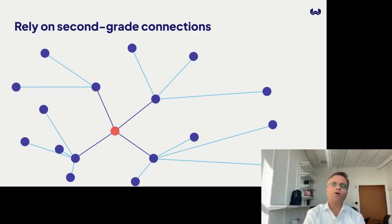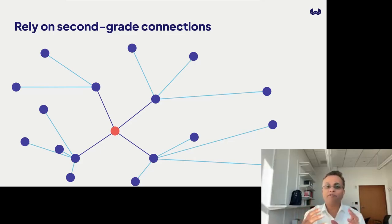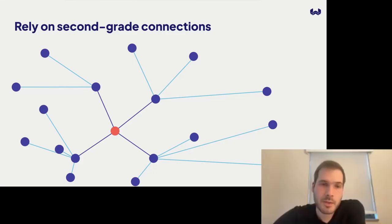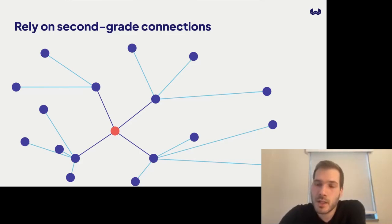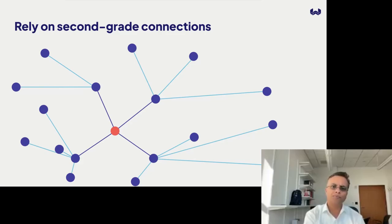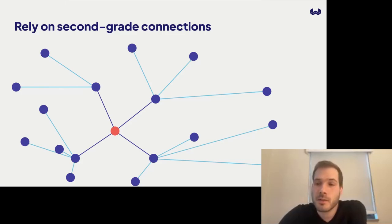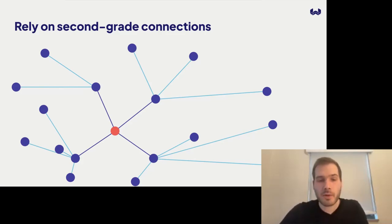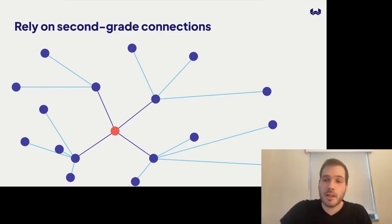Question: do edges tend to vastly outnumber nodes across all layers? The algorithm controls this via the M parameter and pruning. The most recently inserted point has the fewest edges since other points haven't discovered it yet. Overall, the pruning mechanism keeps edge counts in check relative to the number of nodes.